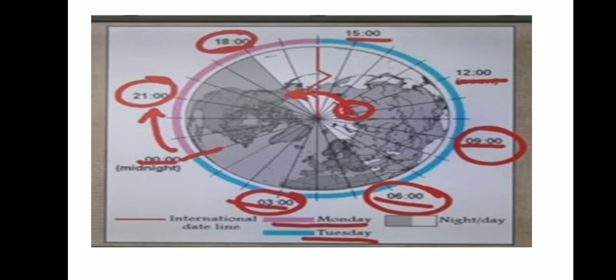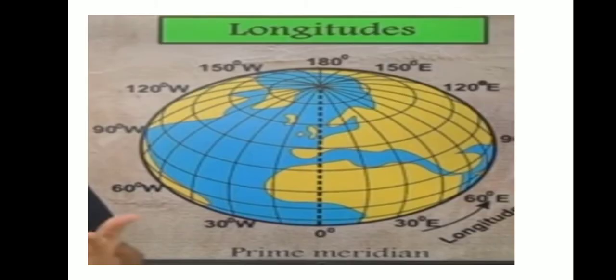A traveler crossing the line from east to west gains a day, while crossing it from west to east loses a day.